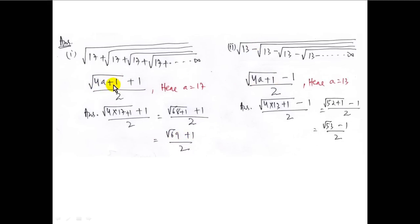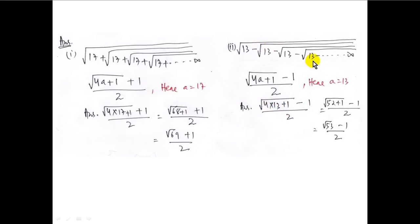In the second case with negative symbols — root over of 13 minus root over of 13 up to infinity — the formula becomes root over of (4a plus 1) minus 1 upon 2. Here a equals 13, so the answer is root over of (4 into 13 plus 1) minus 1 upon 2, which gives root over 53 minus 1 upon 2. This is the required answer.